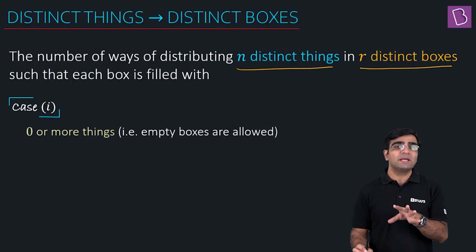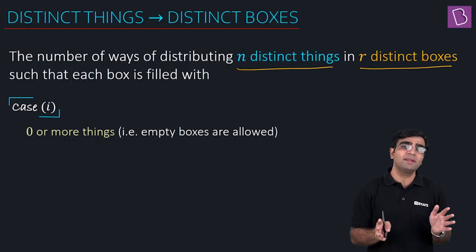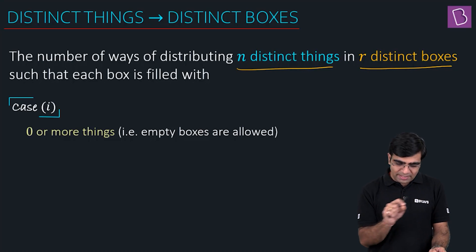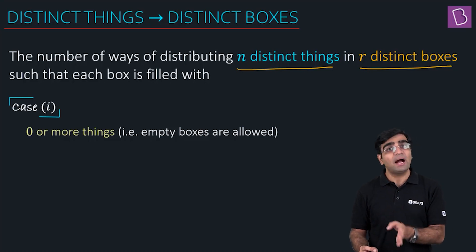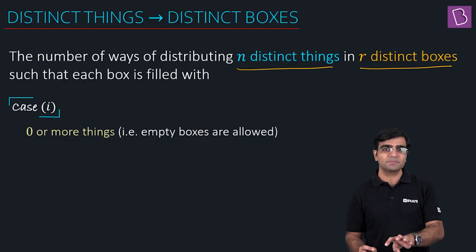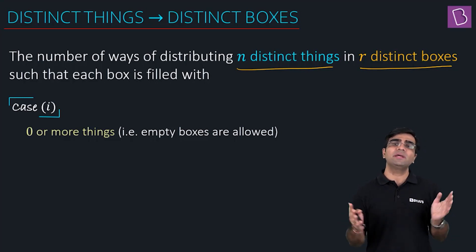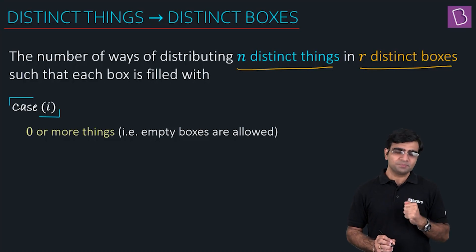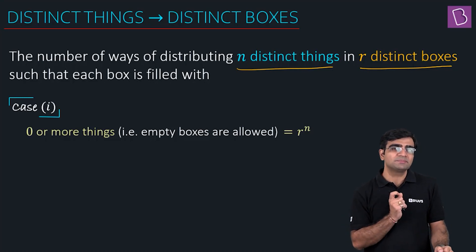Case 1: any number of objects can go into any box. Any box can have zero objects, or all n objects — there is no restriction. The complete statement reads: the number of ways of distributing n distinct things in r distinct boxes such that each box is filled with zero or more things. Can you guess the answer? The answer is r to the power n.